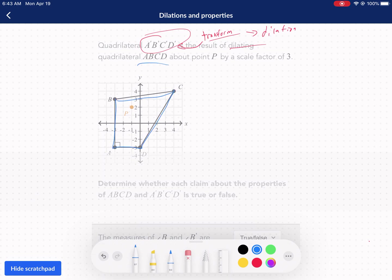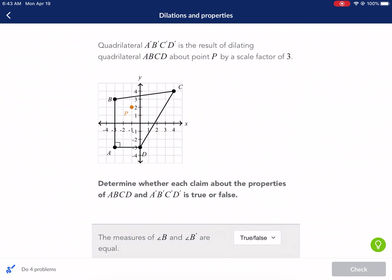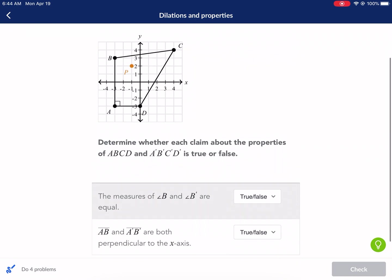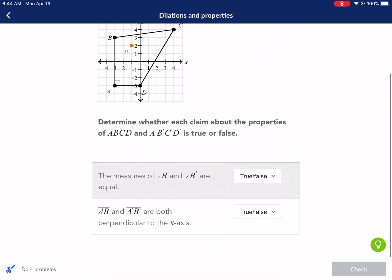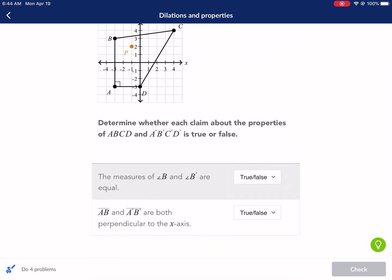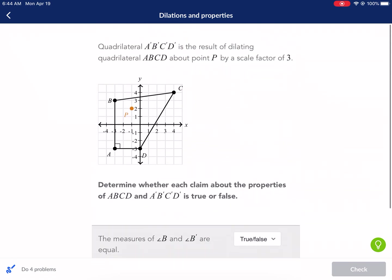This is the original shape right here, ABCD. And we're expanding it, that's what a dilation is, an expansion by a factor of three. So it says, determine whether each claim about the properties of ABCD and ABCD prime is true or false.